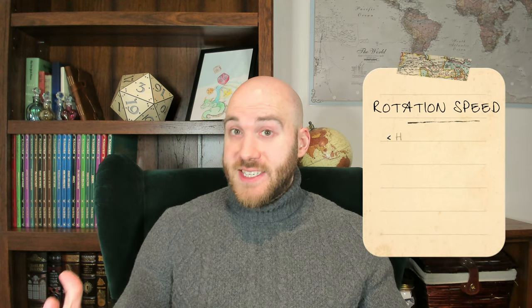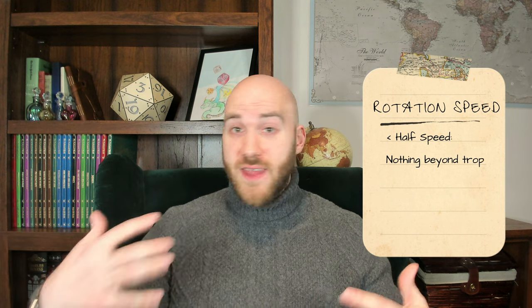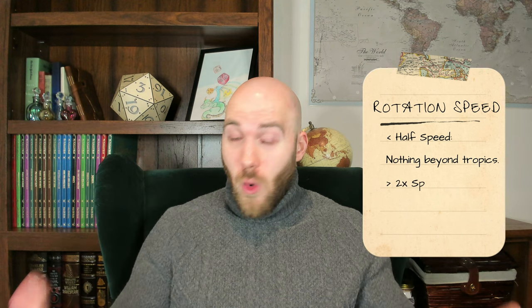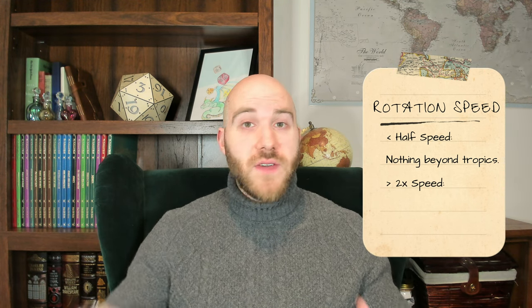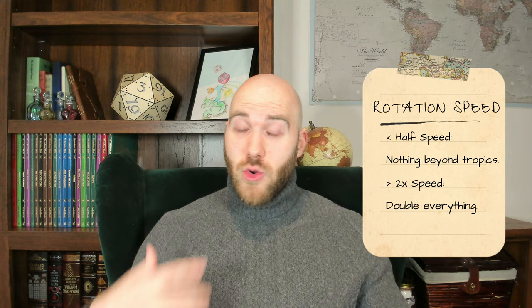If your planet rotates at a different rate, then the zones start to divide into strange variations. Specifically, if a planet rotates at less than half the speed of Earth, it will lose everything more poleward than the tropical easterlies. And if it rotates more than twice as fast as Earth, it will effectively double everything in each hemisphere. For Locus, though, we already know that it rotates at a similar speed and in the same direction as Earth, so we'll be keeping things the same as Earth.